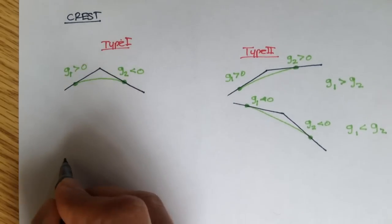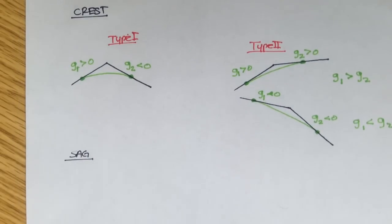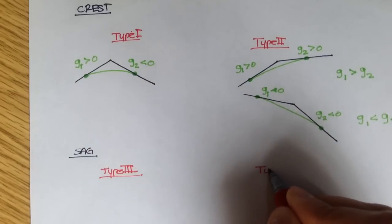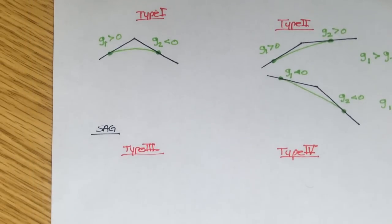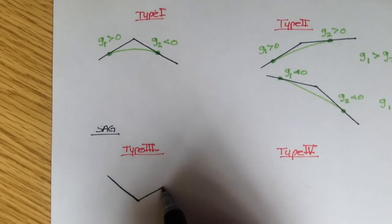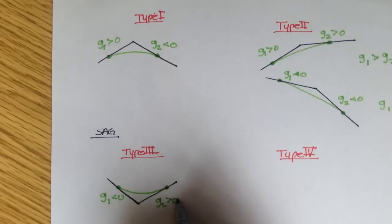The second type of vertical curves are called sag curves. Sag curves are also called happy face curves because they form a happy face, and they're also called inverts. Just like crest vertical curves, there are two types of sag vertical curves: Type 3 and Type 4. For Type 3 sag vertical curves, this is when you have an entering grade that's negative and an exiting grade that's positive.